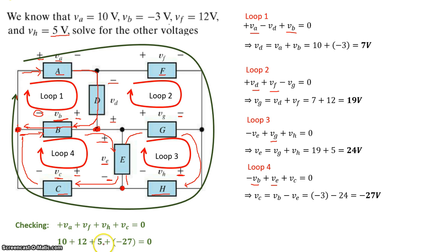Minus 27 equals zero, so that checks out. Since this equation is satisfied, we can confidently say that all the calculations we did here for these four unknown values should be correct.